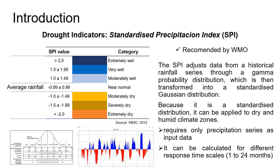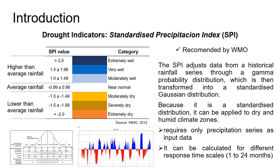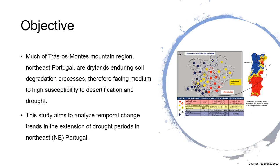According to the categories shown in the table, the average rainfall is expressed at central values, while positive values correspond to higher average rainfall and negative values represent lower average rainfall, so the drought period classes. Much of Trás-os-Montes mountain region in Northeast Portugal are drylands undergoing soil degradation processes, therefore facing medium to high susceptibility to desertification and drought.